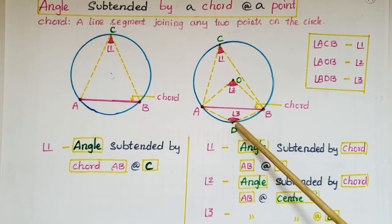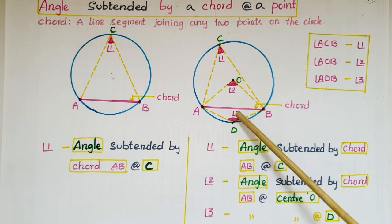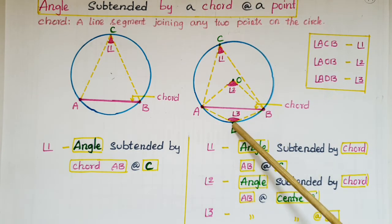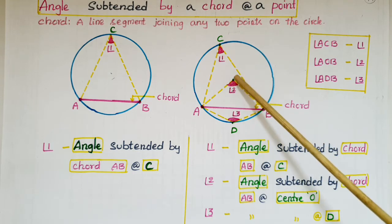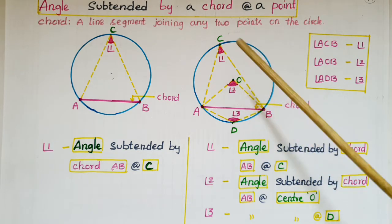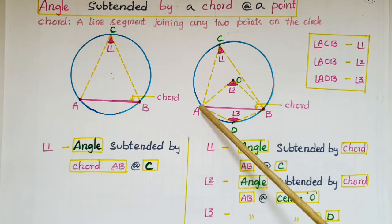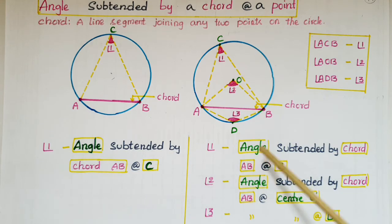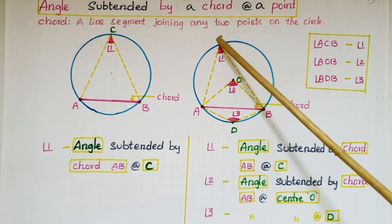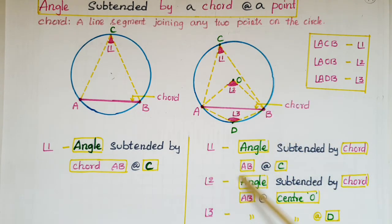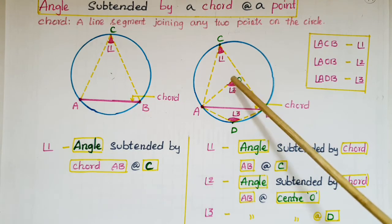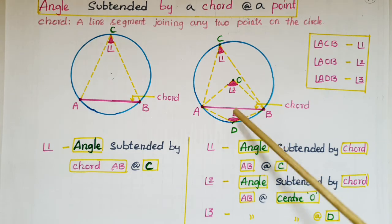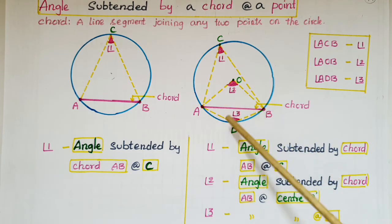Now take any point D on the circumference of the circle — angle 3 is the angle subtended by chord AB at point D. Here O is the center of the circle, so angle 2 is the angle subtended by chord AB at the center O. So angle 1 is the angle subtended by chord AB at C, angle 2 is the angle subtended by the chord at the center O, and angle 3 is the angle subtended by the chord at D.